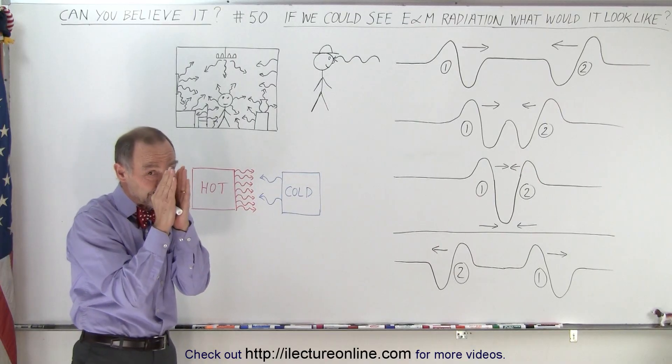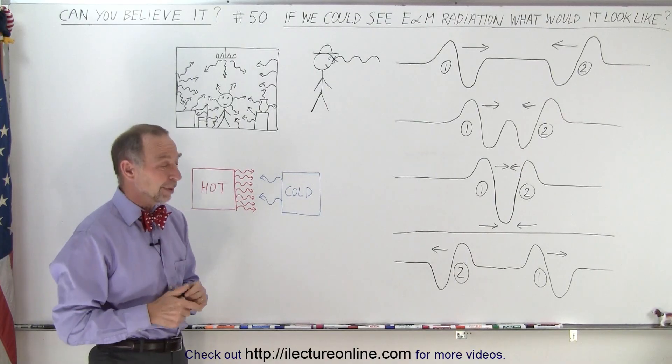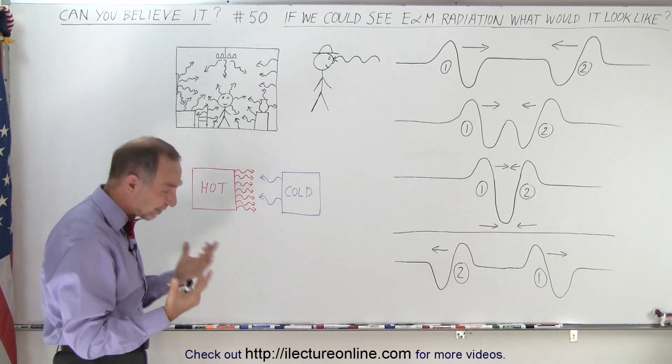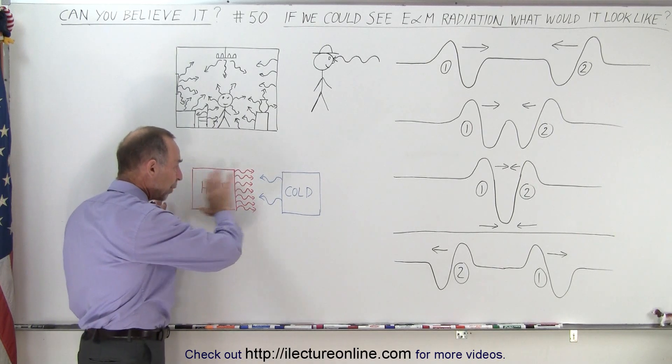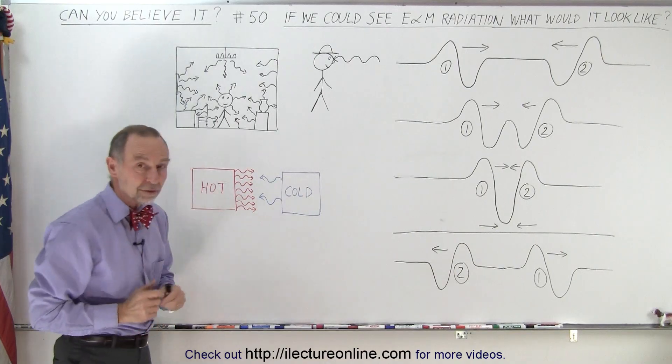Instead, we only see a very small slice of it, which is the visible light. So what's happening, really what it comes down to, is that every hot object puts out way more radiation than every cold object.